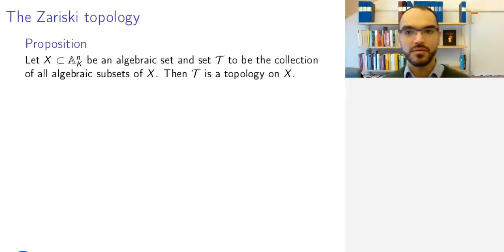So now let us finally look at the Zariski topology. We are not anymore looking at arbitrary abstract sets X, but now we're looking at algebraic sets. Consider an algebraic set in Aⁿ and set T to be the collection of all algebraic subsets of X. Then this is a topology on X.